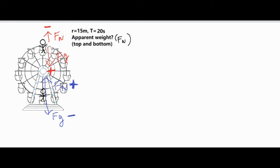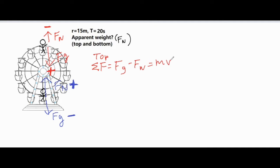Let's focus on the top of the ferris wheel first. We take the sum of forces in the radial direction — radial in points toward the center, radial out points away. At the top, gravity is our positive centripetal driving force and the normal force points away from the center. This equals mass times centripetal acceleration.